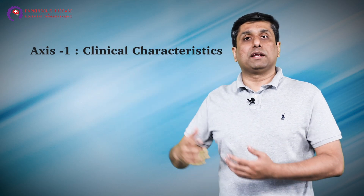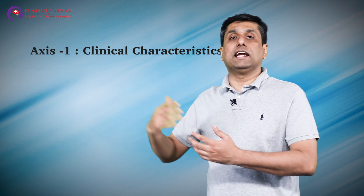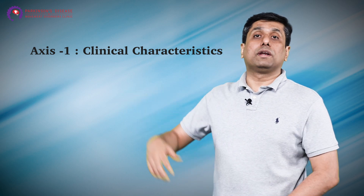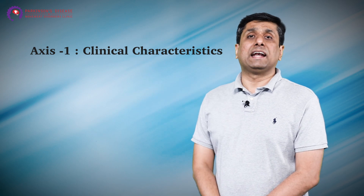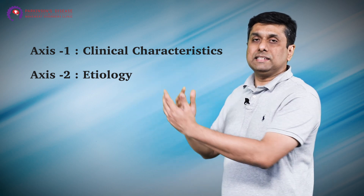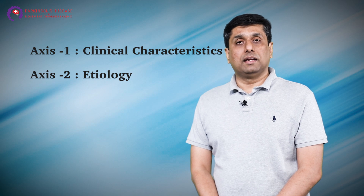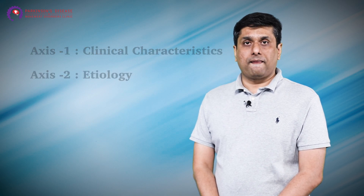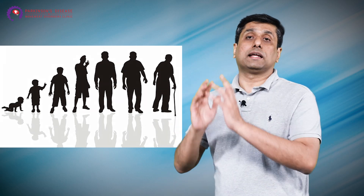According to the International Movement Disorder Society's classification, dystonia is divided into two different entities. Axis one describes which body part is affected, how it is affected, at what age it is affected, and how it has progressed. Axis two is the etiological definition. You match those two things to determine what type of dystonia a person has. Dystonia can occur at any age, from birth until death, depending on the underlying cause — it is not limited to a certain age group.